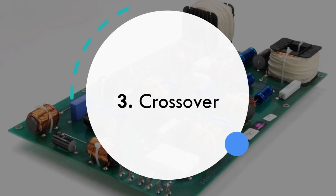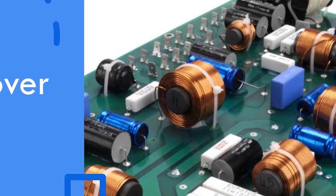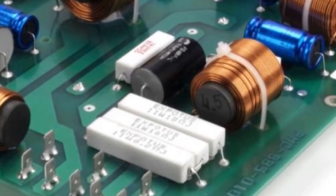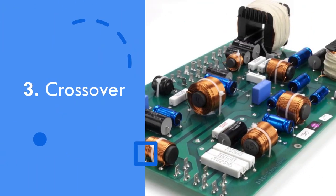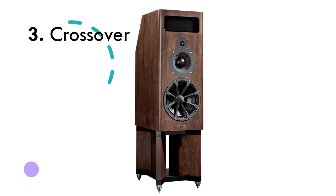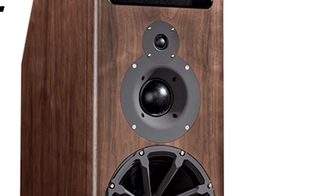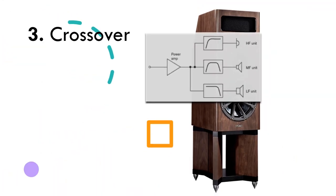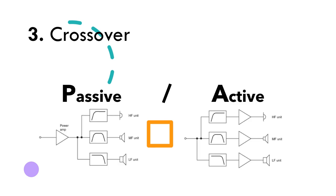Finally, we have the crossover. A crossover network is typically an electronic network of filters made up of inductors, capacitors, and resistors. The function of these filters is to split up the audio spectrum into different frequency bands. So for example, here we have a three-way loudspeaker — therefore the crossover network needs to split the audio into highs, mids, and lows. Crossovers can be passive or active. A passive crossover comes after the power amplifier. An active crossover works at line level and requires an amplifier for each frequency band.